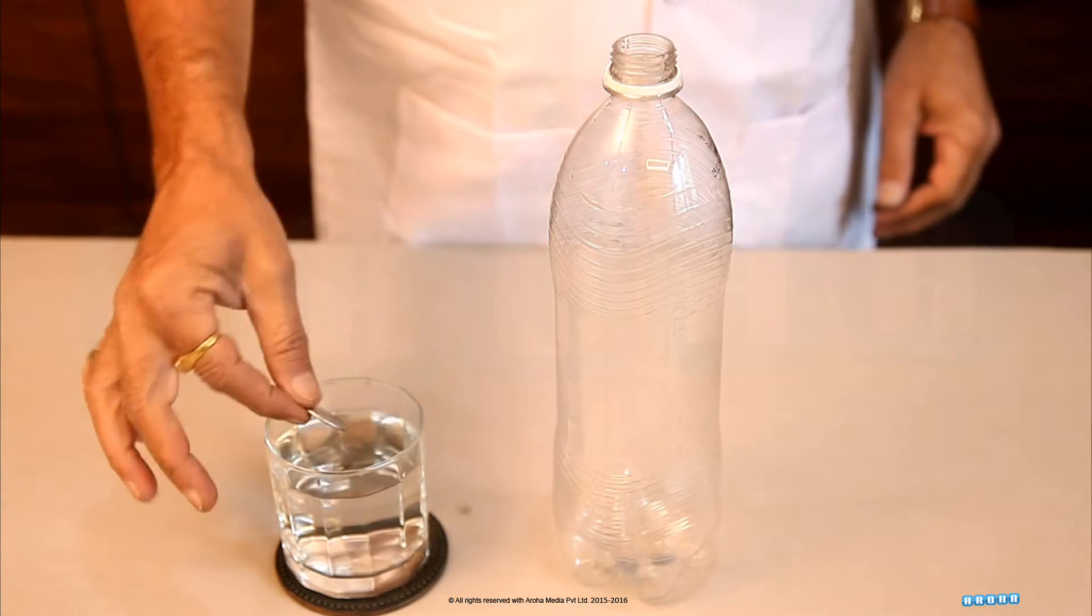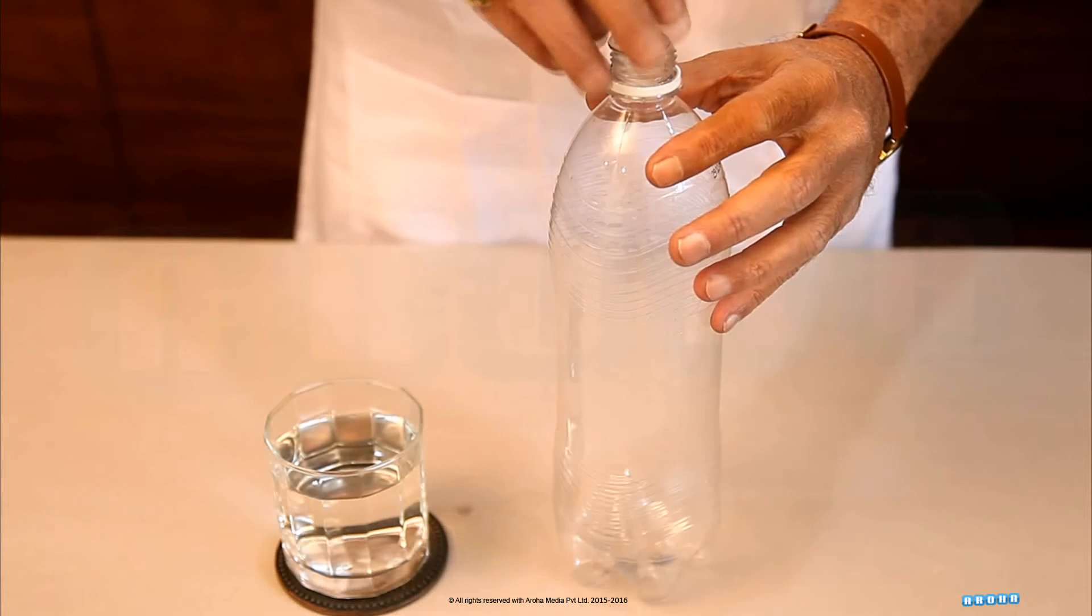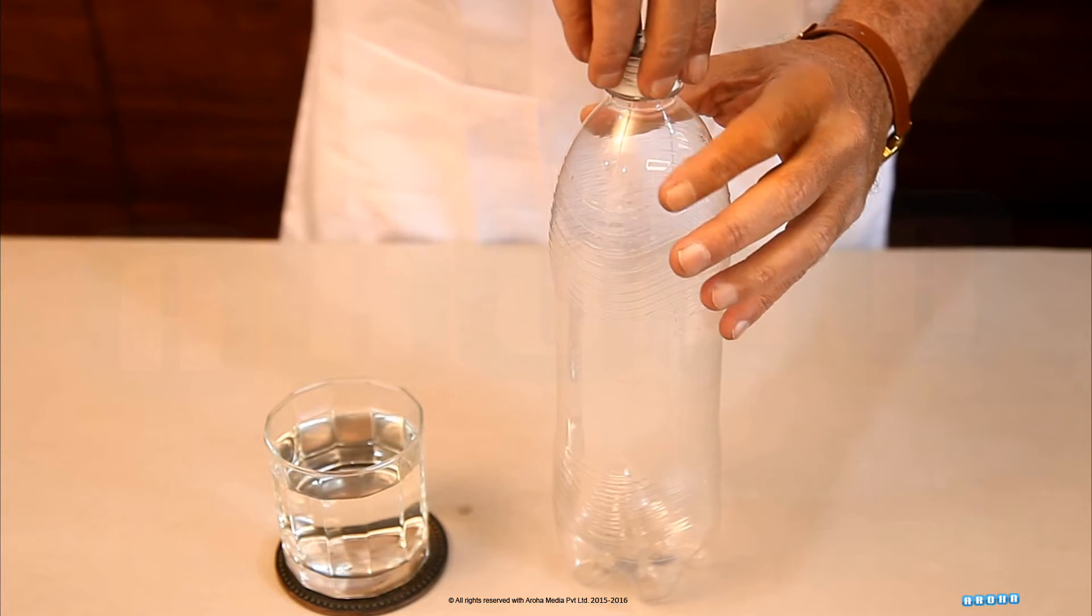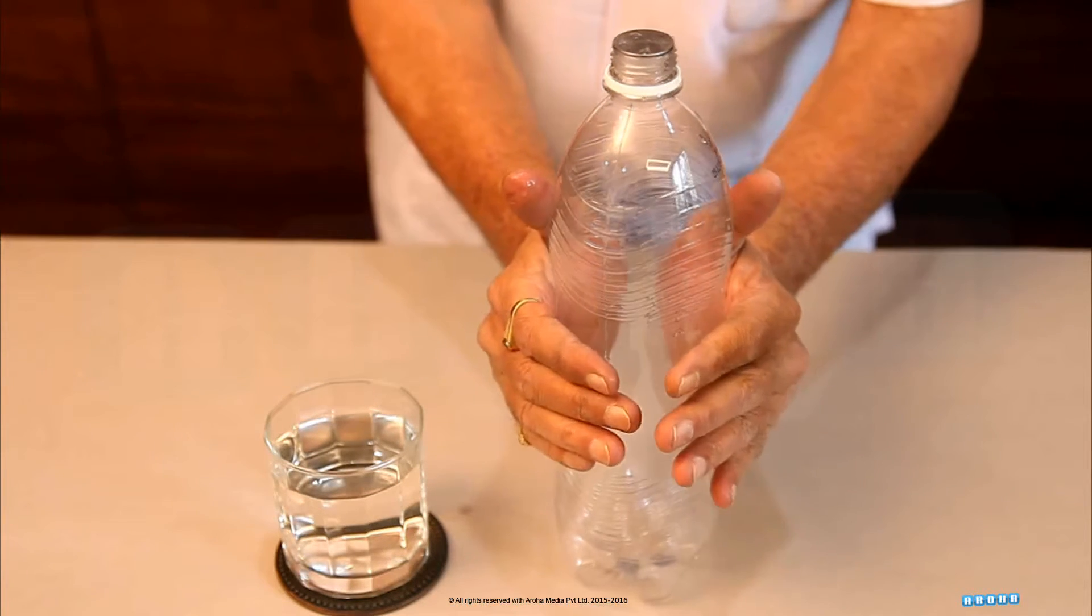Soak a coin in water and place it on the mouth of the plastic bottle. See that the mouth is completely sealed and there are no gaps there. Now hold the bottle with both the hands.